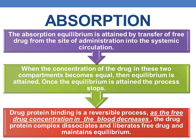Coming to absorption — the absorption equilibrium is attained by the transfer of free drug from the site of administration into the systemic circulation. When the concentration of the drug at the site of administration and in the systemic circulation becomes equal, equilibrium is attained and once equilibrium is attained, the process stops. This is the regular absorption process.